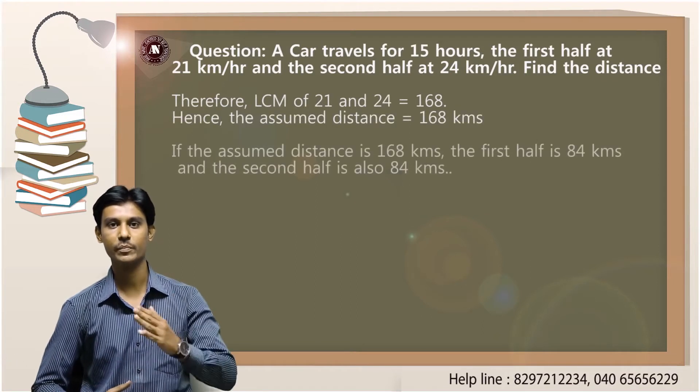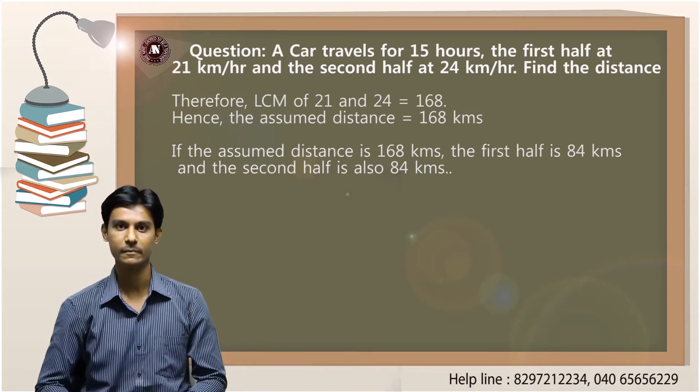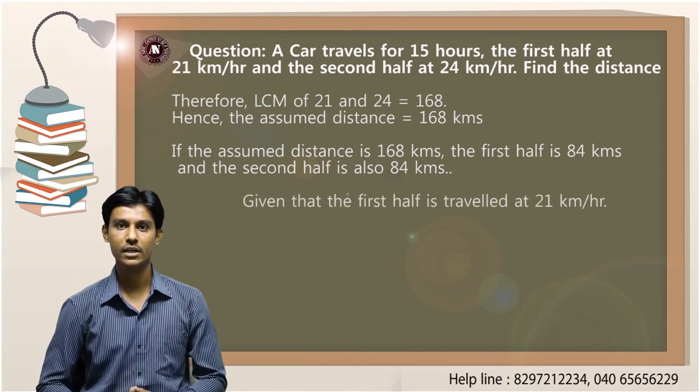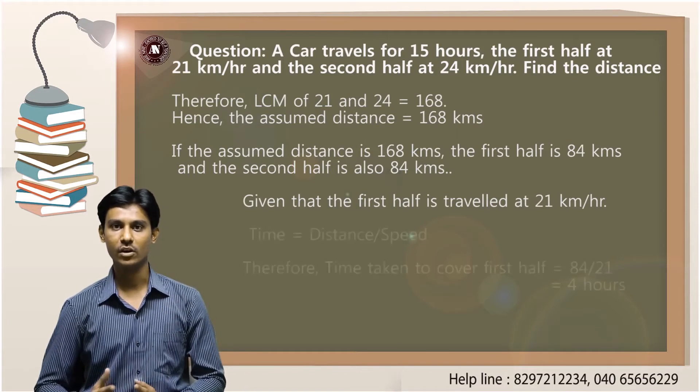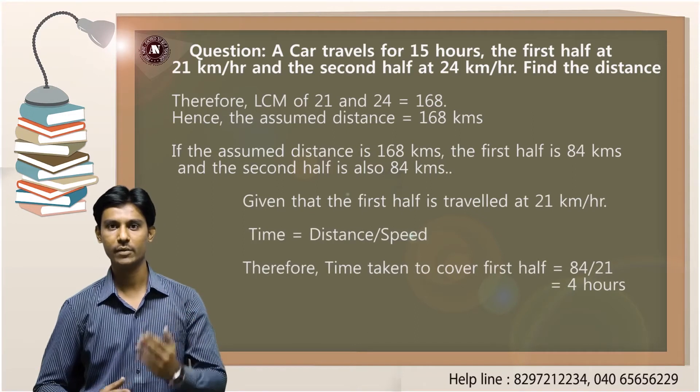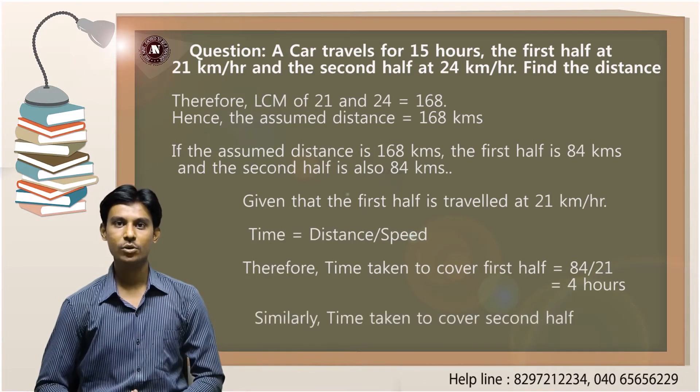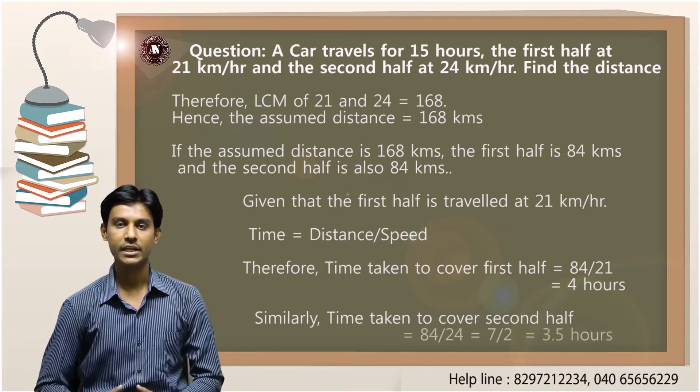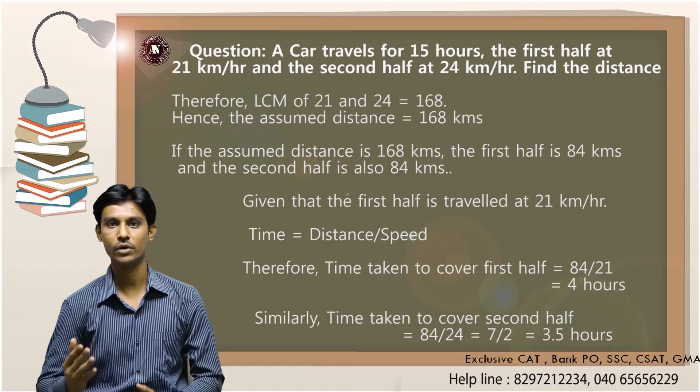That means the first half becomes 84 kilometers and the second half also becomes 84 kilometers. The first half is traveled at 21 kilometers per hour. That means the time taken to travel at 21 kilometers per hour is 84 divided by 21, which is 4 hours. Similarly, the time taken to cover the second half is 84 divided by 24, which is 7 by 2, or 3.5 hours.